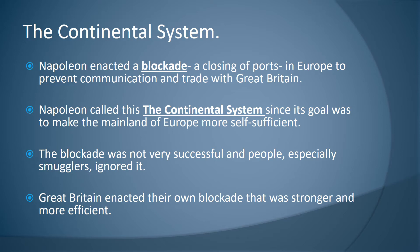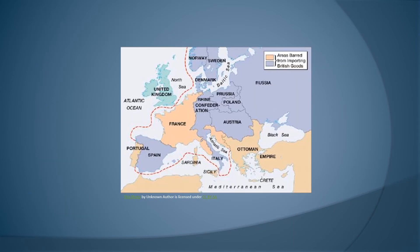The continental system: Napoleon enacted a blockade — a closing of ports in Europe — to prevent communication and trade with Great Britain, since France and Britain were essentially arch enemies at this time. Napoleon called this the continental system, as its goal was to make the mainland of Europe more self-sufficient. However, the blockade was not very successful; people, especially smugglers, ignored it. Great Britain enacted their own blockade that was stronger and more efficient against France.